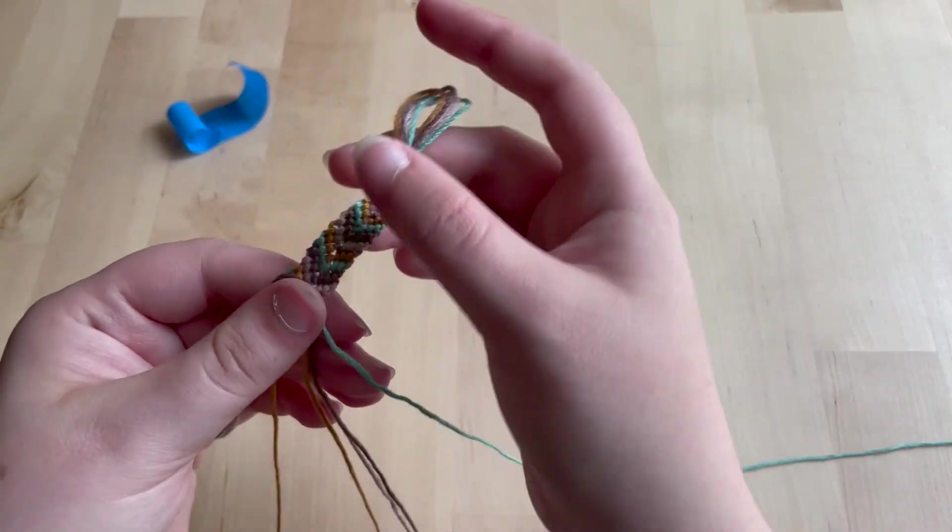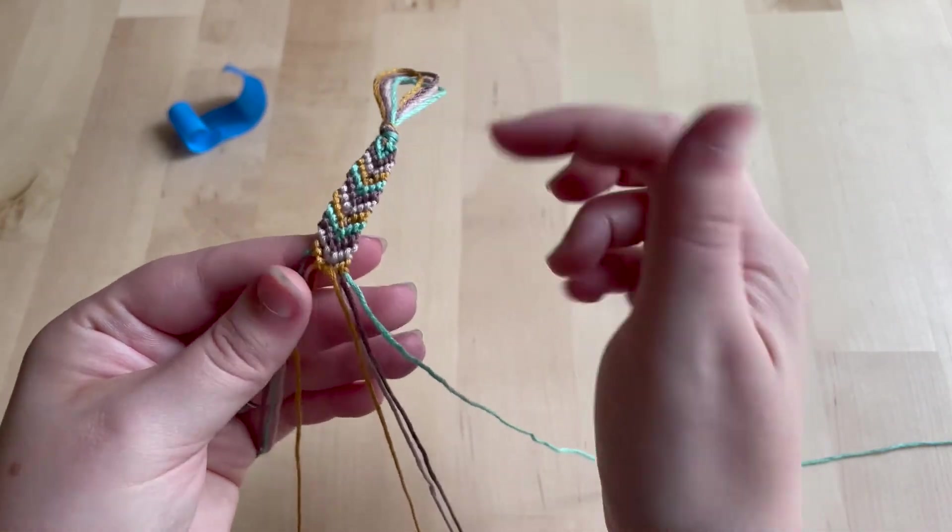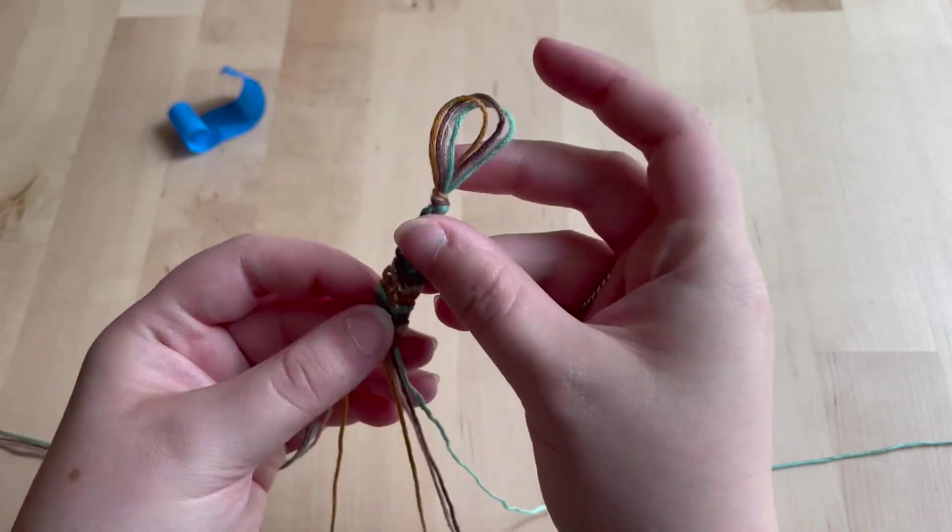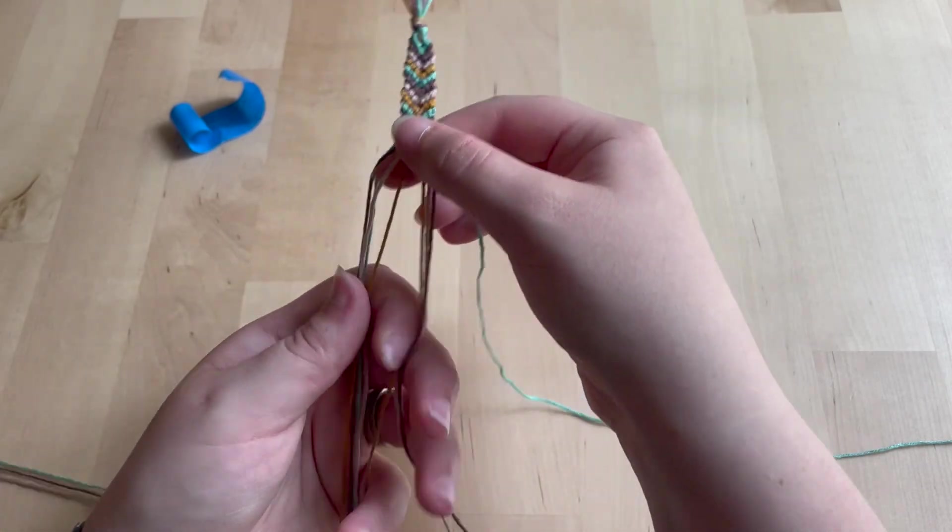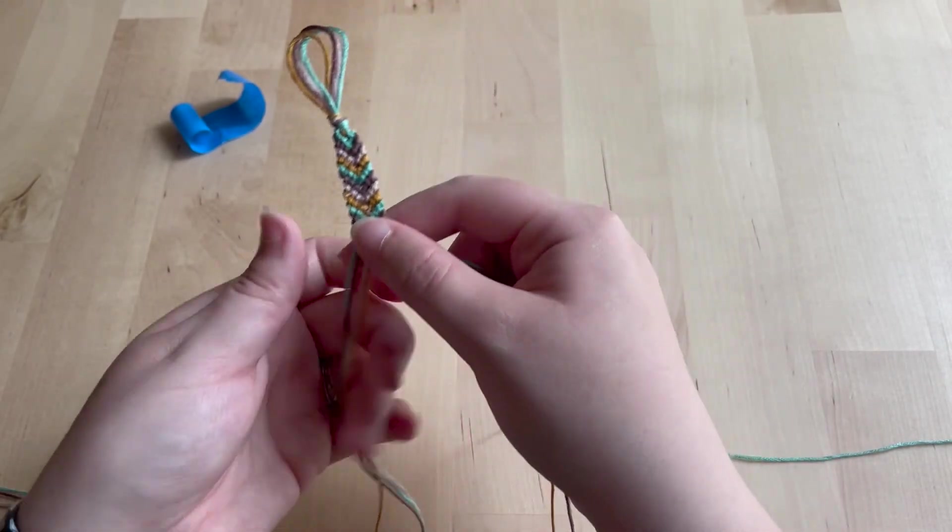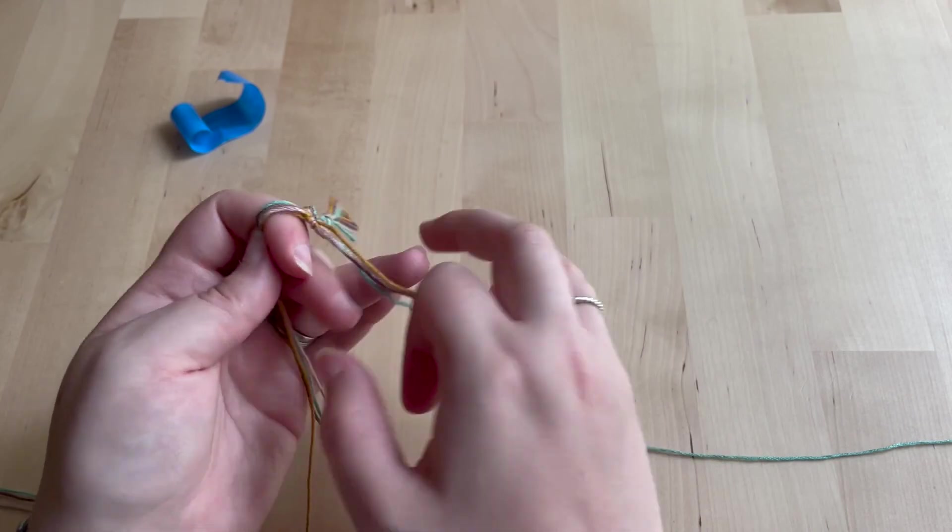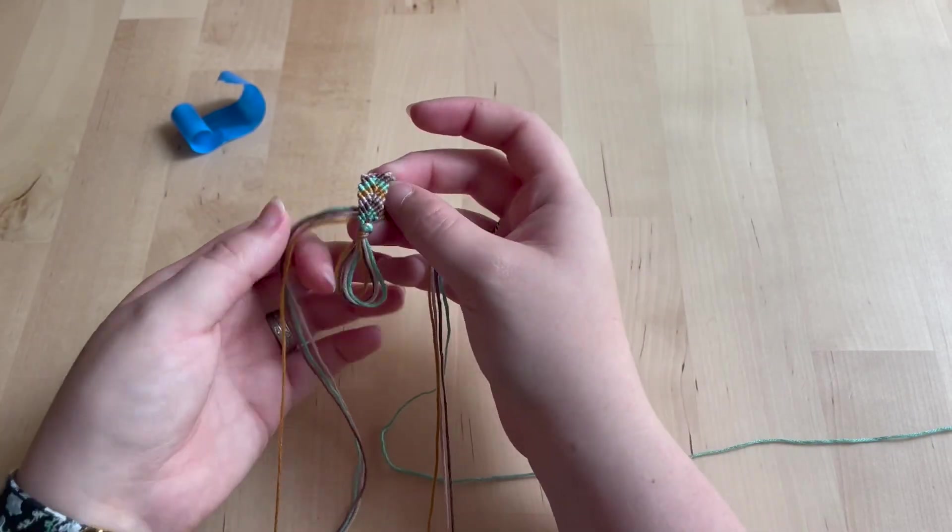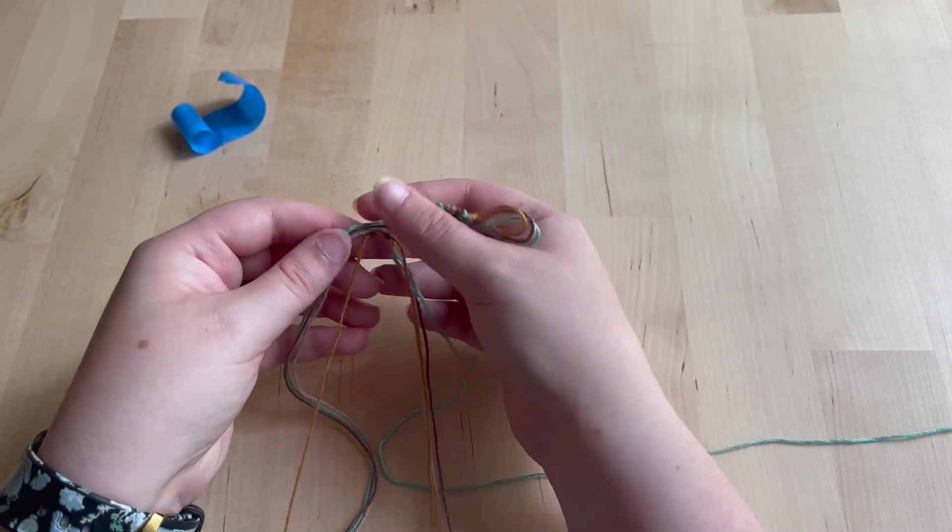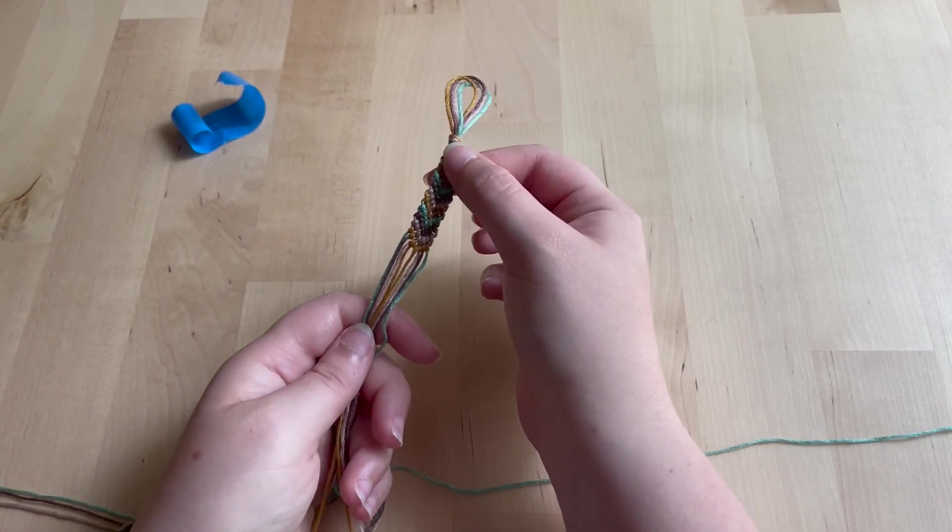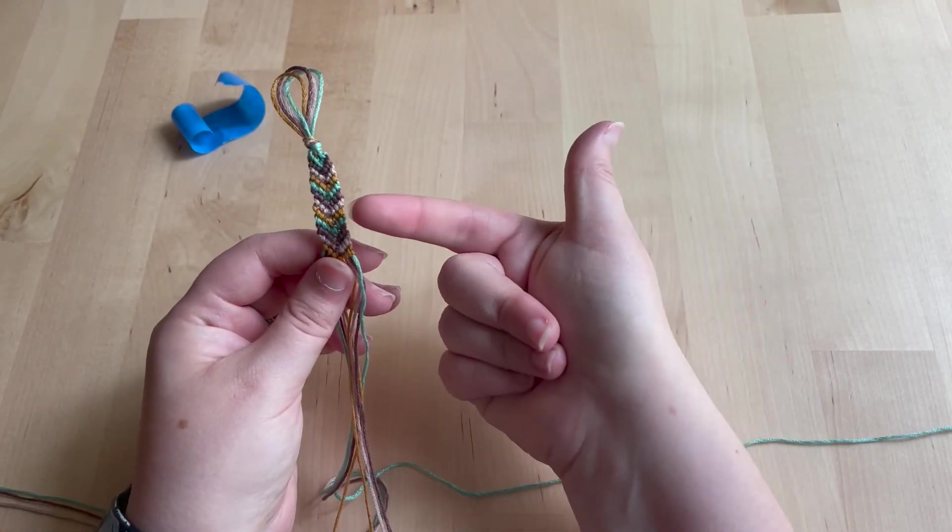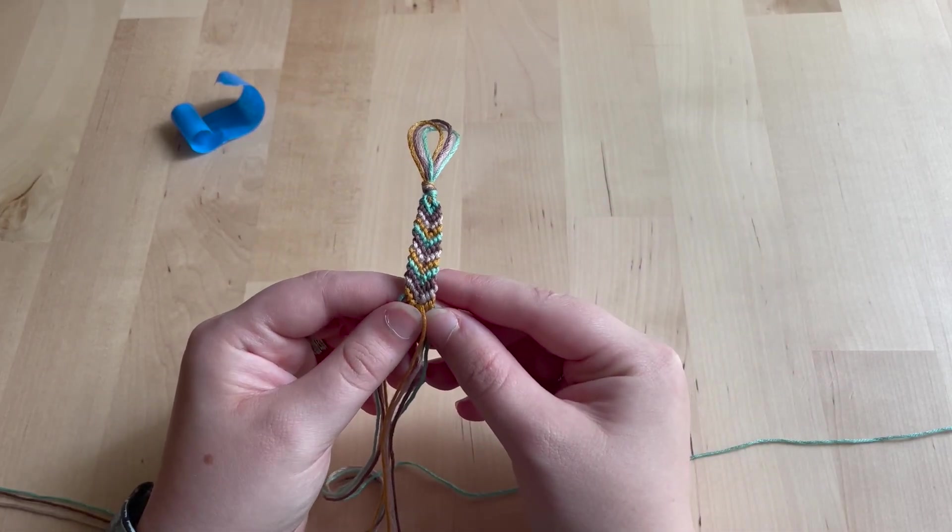So if you want to end your bracelet, you can just bunch your strands into two groups and tie a knot. That works. You could also put your strands into groups and braid them. That makes a little bit more of a secure ending. But that is how you make the friendship bracelet.